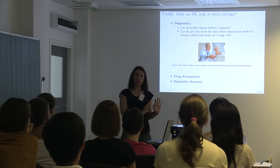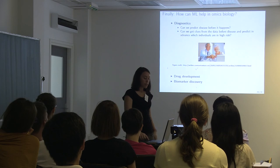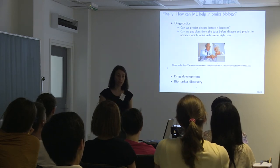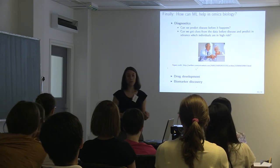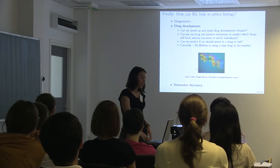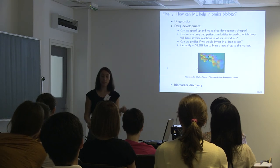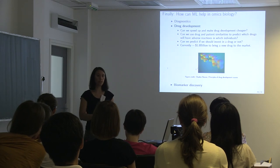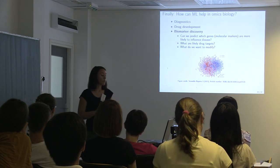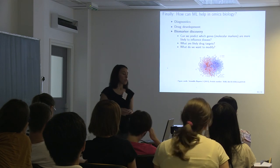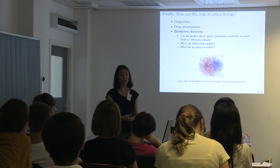Machine learning can help in diagnostics — for example, predicting stroke by collecting data from people who have had strokes and finding patterns to predict it in the future. It's useful in drug development, where we find similarities between drugs and patients to predict which drugs are worth investing in. Finally, biomarker discovery uses large omics data to identify which features are useful for specific predictions.